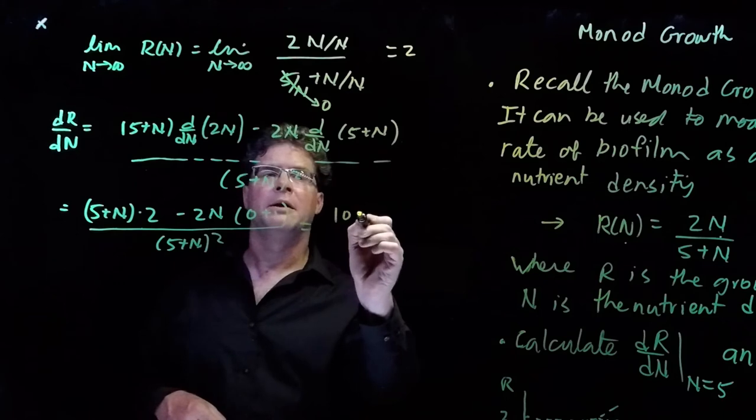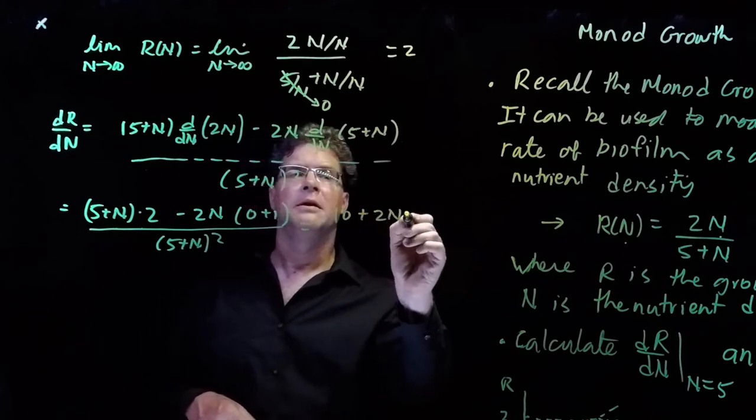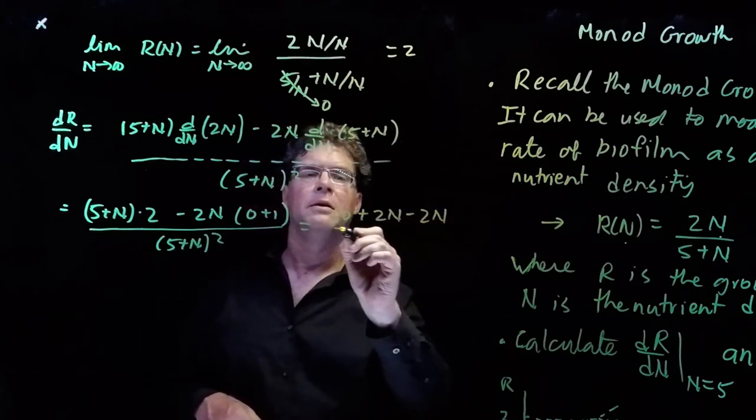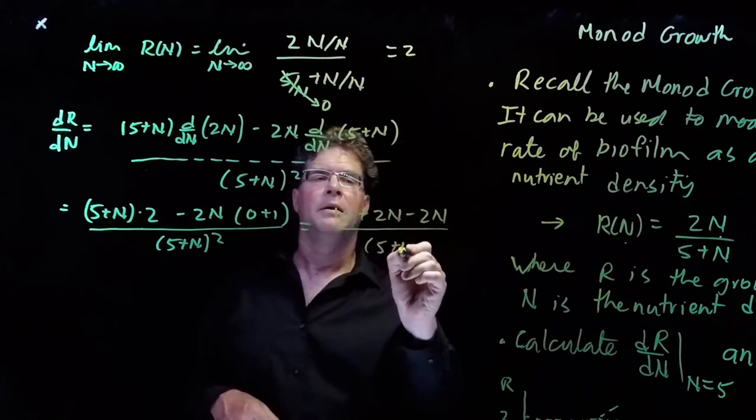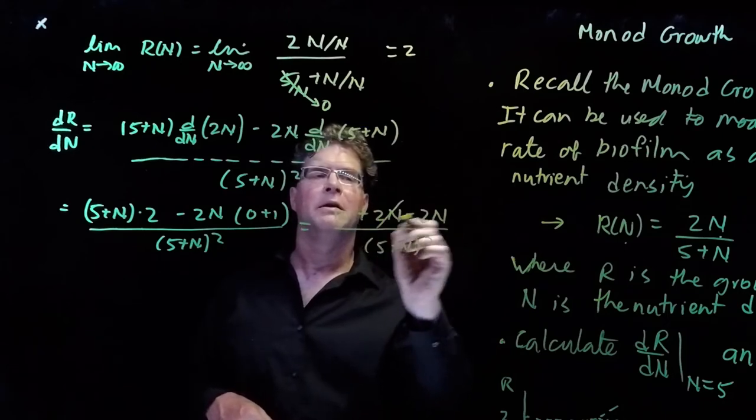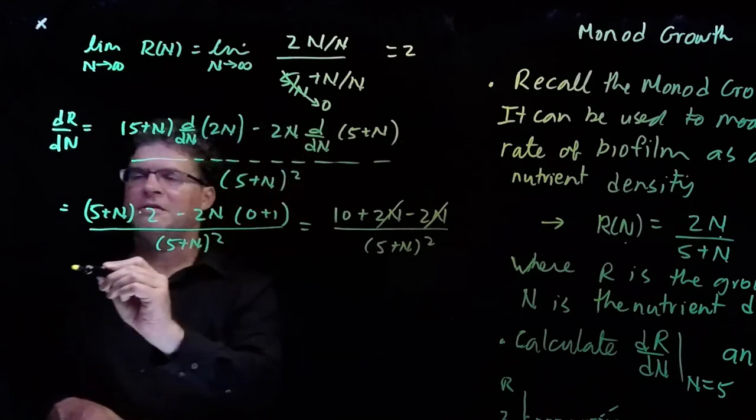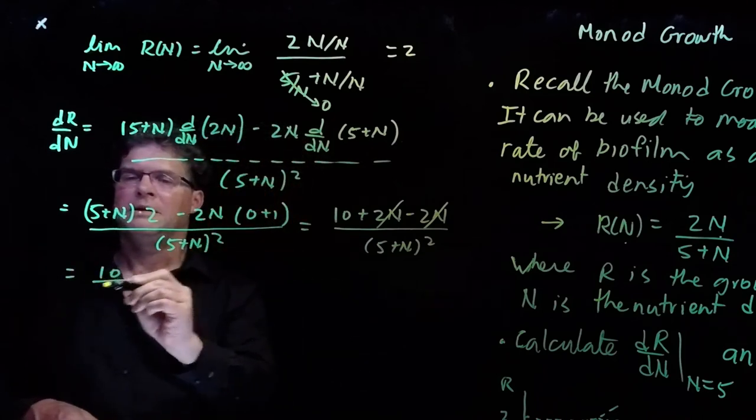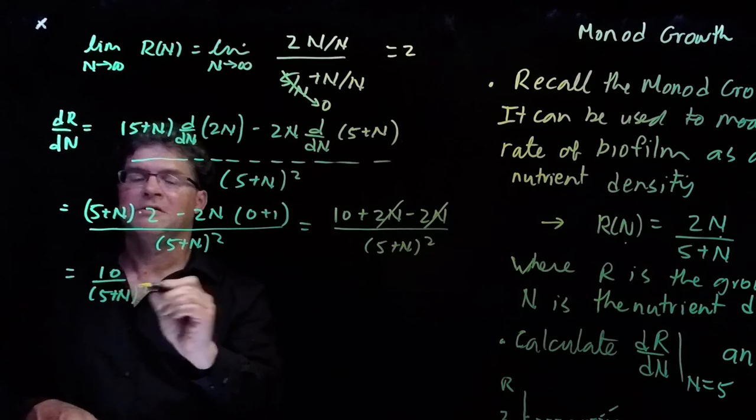So that turns out to be 10 plus 2n minus 2n, all divided by 5 plus n squared. And so this equals 10 over 5 plus n squared.